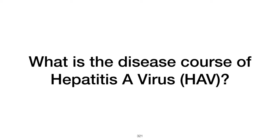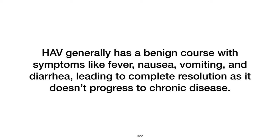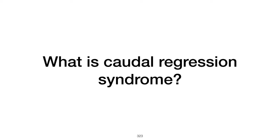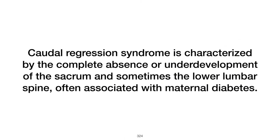What is the disease course of hepatitis A virus infection? The disease course of hepatitis A is generally benign, characterized by fever, nausea, vomiting, and diarrhea. It is self-limiting and typically resolves without progressing to chronic disease. What is caudal regression syndrome? Caudal regression syndrome is a rare disorder characterized by abnormal development of the lower (caudal) end of the spine, which can range to more severe cases involving the lumbar spine, potentially leading to leg paralysis and organ dysfunction.